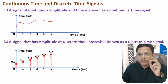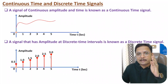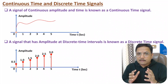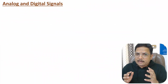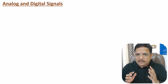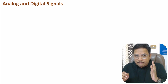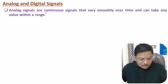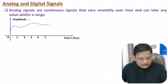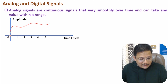With discrete time signals, we have amplitude at discrete time intervals. Now, analog signals are similar to continuous time signals — amplitude will vary continuously and smoothly with respect to time. If you observe here, we have one example of an analog signal, similar to a continuous time signal, where amplitude will vary continuously and smoothly with respect to time.